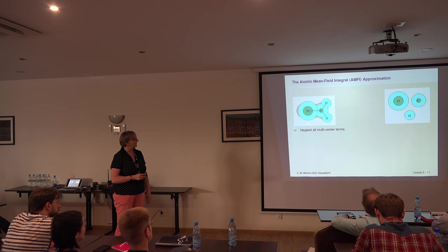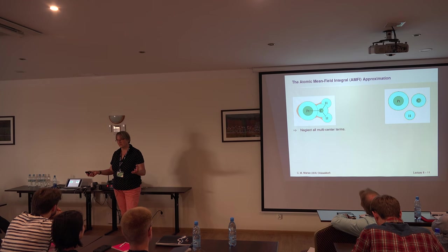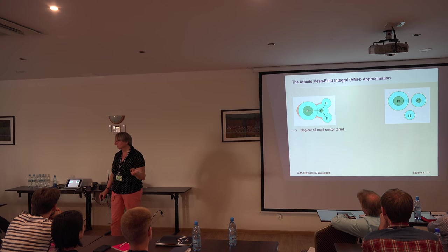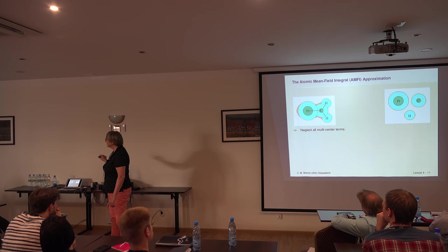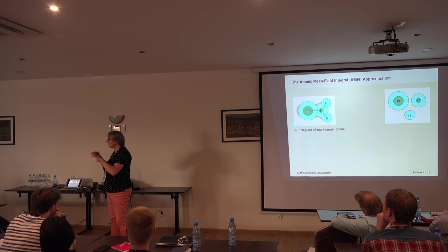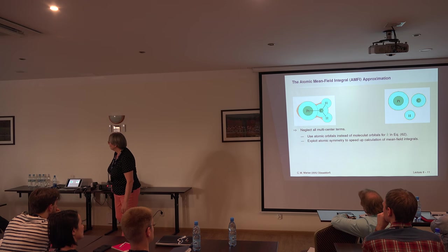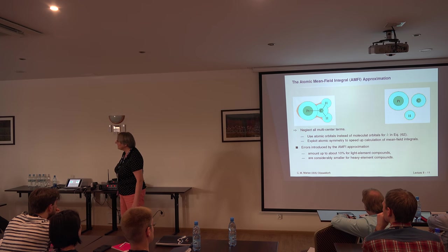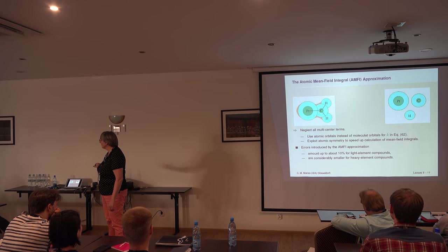Instead of calculating, for instance, the full PTACH2 molecule integrals, you just break your system apart and look only at one-center terms — effectively treating atoms. For atoms you can calculate integrals very fast using spherical symmetry. You calculate the spin-orbit integrals in the atomic basis for every element, then transform everything into your molecular basis. This is called the atomic mean-field integral (AMFI) approximation.